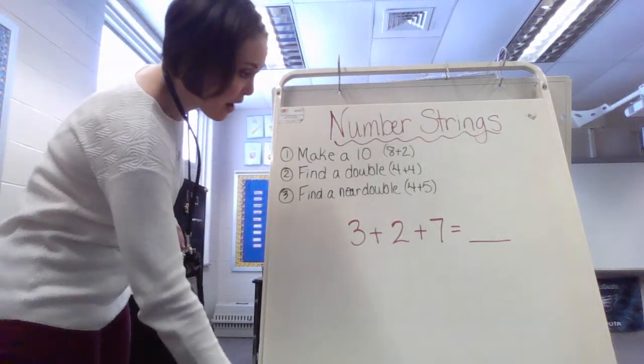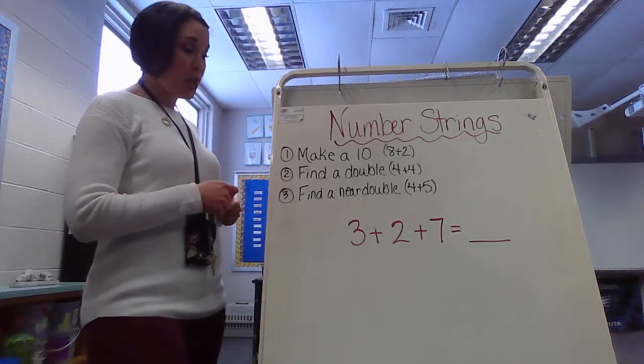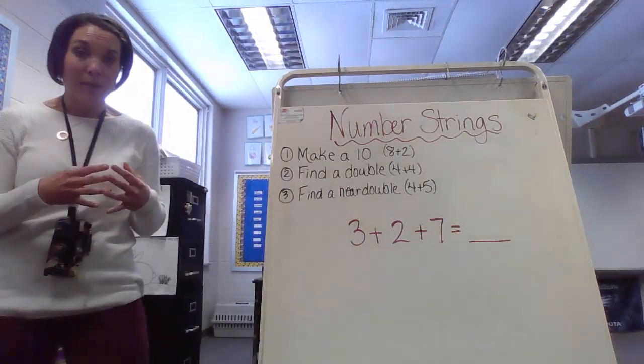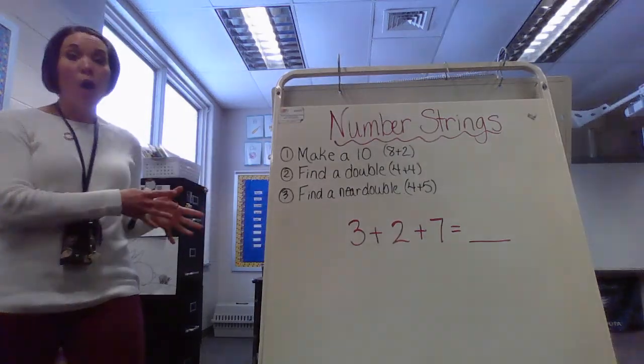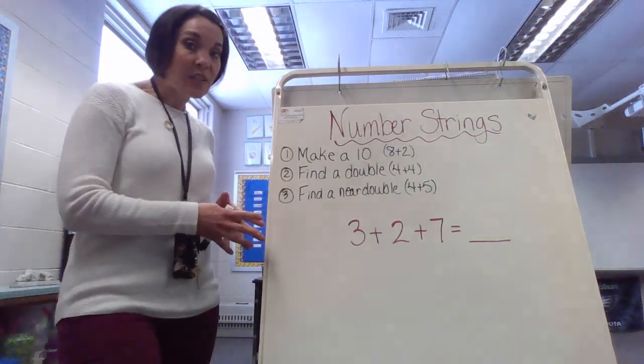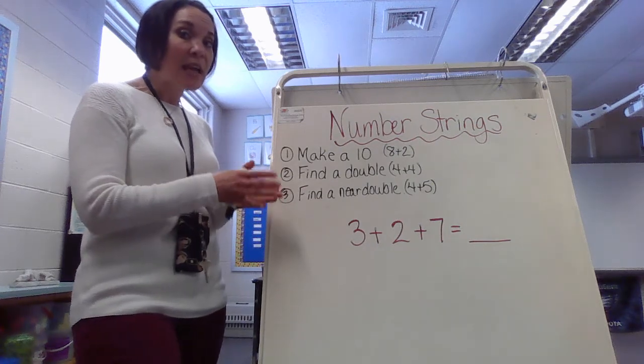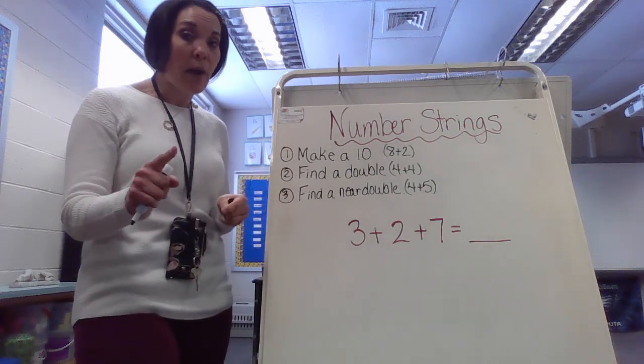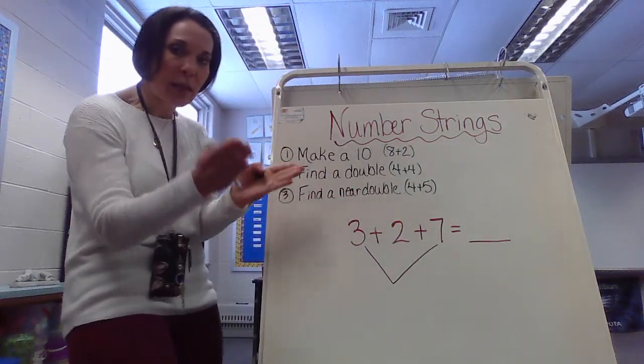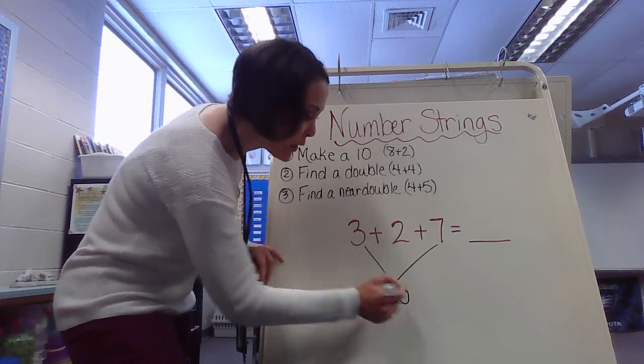I have 3 plus 2 plus 7. So let's take a look at what we have for our strategies. First one, I always like to make sure, is there a way that I could make 10? So this goes back for you to know those make 10 combinations. I'm hoping you're looking at this number string, and I hope you could really identify that 3 and 7 is going to be 10.